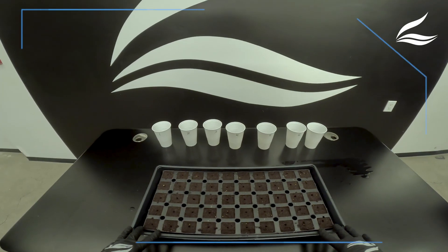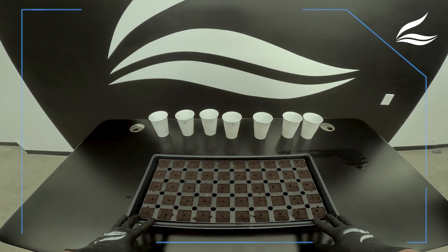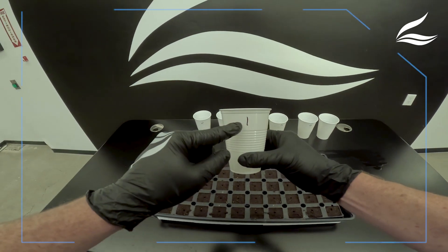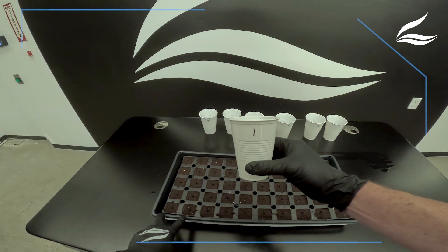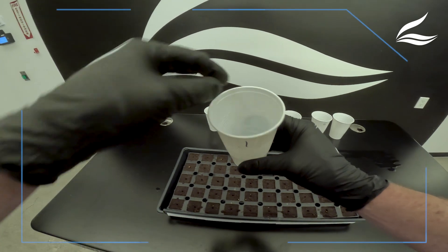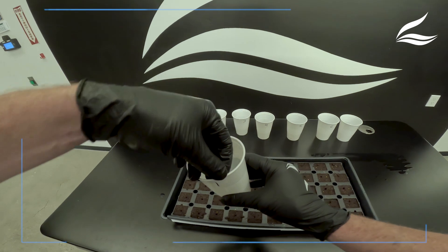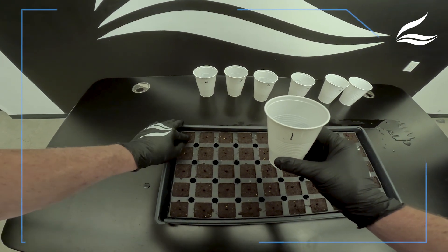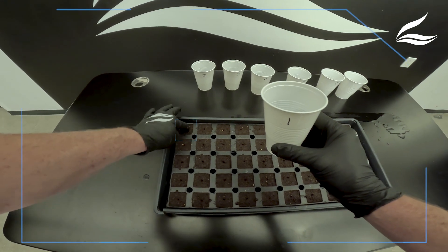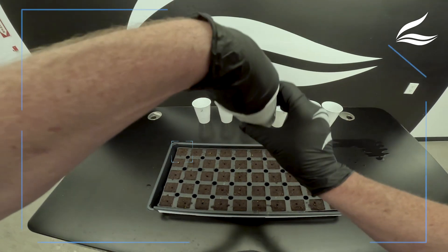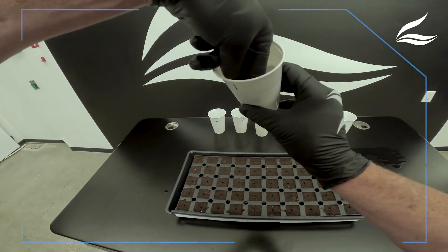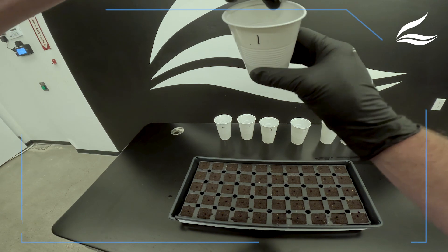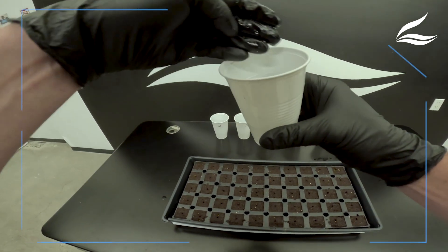Now that the seeds have been soaking for 24 hours, we're going to be able to start putting them into the tray, into the cubes. Always important to label everything you're doing. You've got to know exactly what's what. Then you just push it right into the little hole that's already in the medium. They come with a little pressed hole. You want to push them in about an eighth of an inch or so. Makes it really easy.